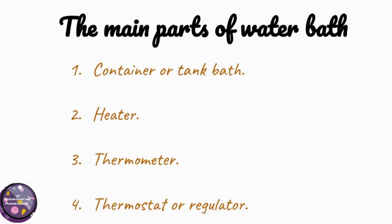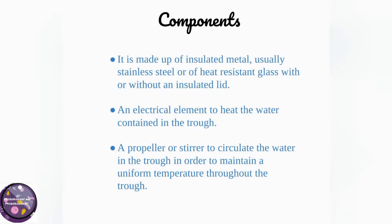The main parts of a water bath are: container or tank, bath heater, thermometer, and thermostat or regulator. It is made up of insulated metal, usually stainless steel, or heat-resistant glass, with or without an insulated lid. It includes an electrical element to heat the water and a propeller or stirrer to circulate the water in order to maintain a uniform temperature throughout the trough.